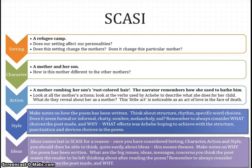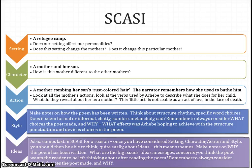For action, one of the very interesting actions is the mother combing her son's rust-coloured hair. Our narrator remembers also how she used to bathe the child. Look at all of the mother's actions — look at the verbs used by the poet to describe what she does for her child. Think about what these verbs reveal about the mother and how she feels. This little act is noticeable as an act of love in the face of death. These acts should have been normal daily routines for a mother and a child, but take on much heavier, much more painful, much more sorrowful connotations in this setting.